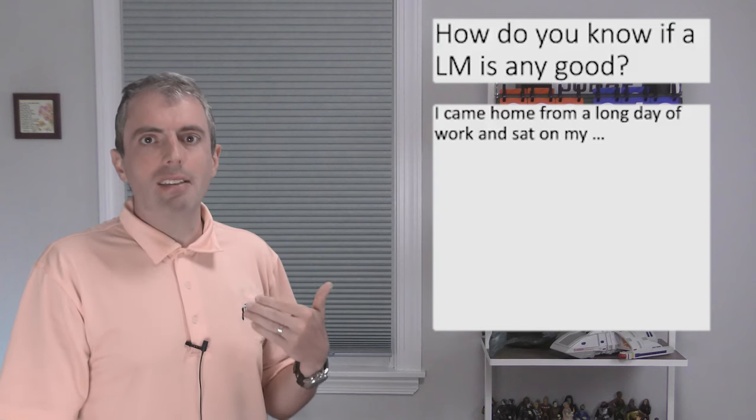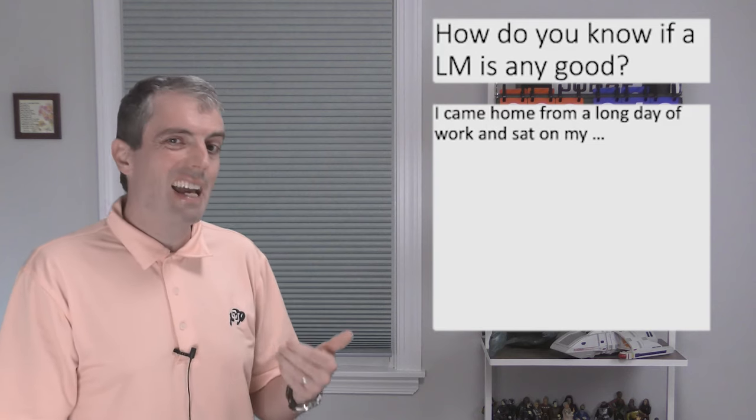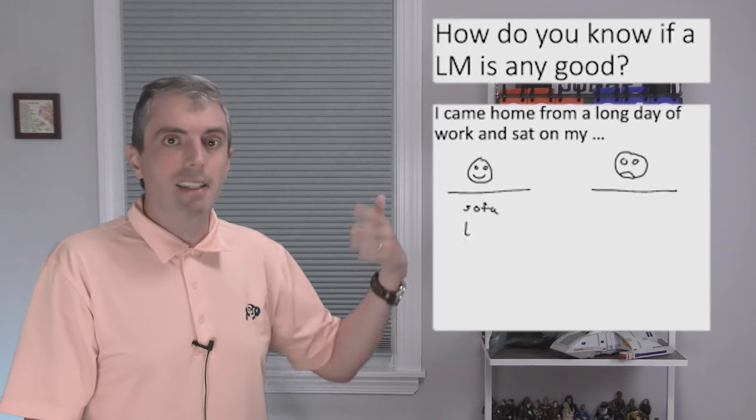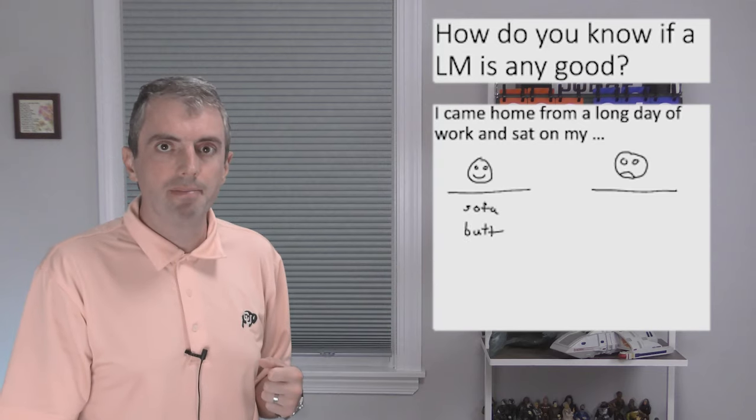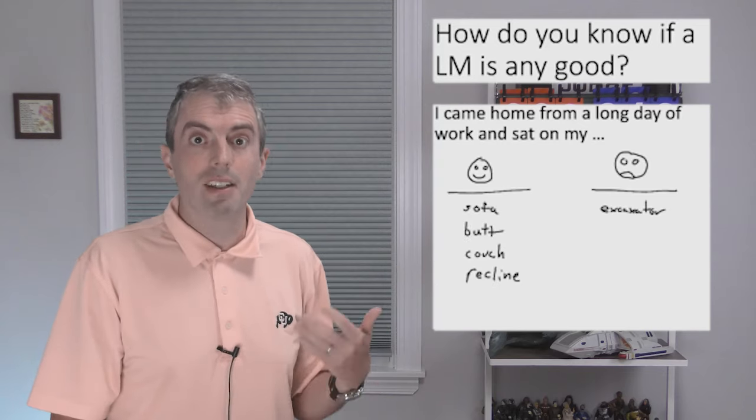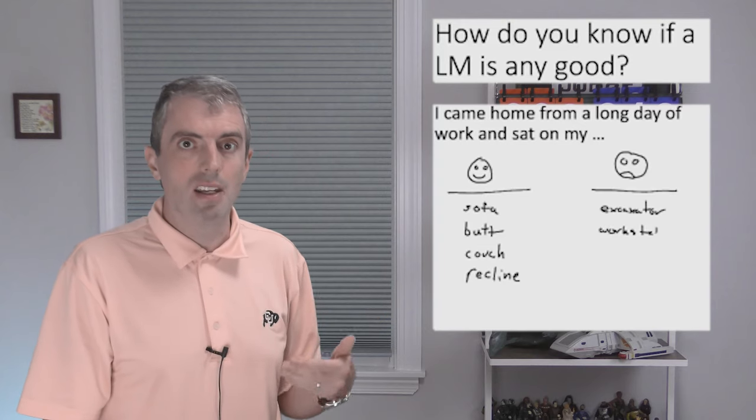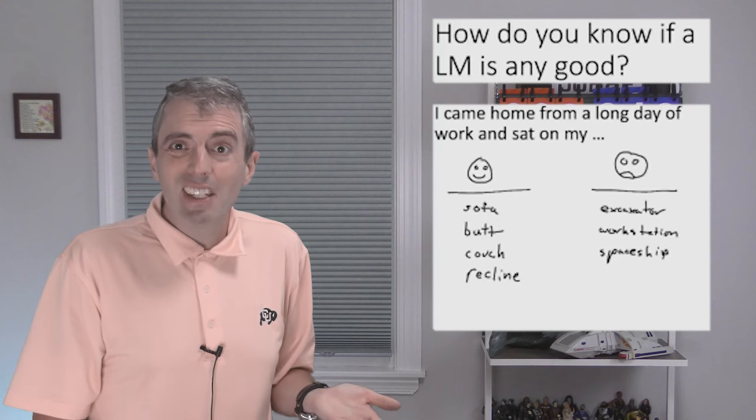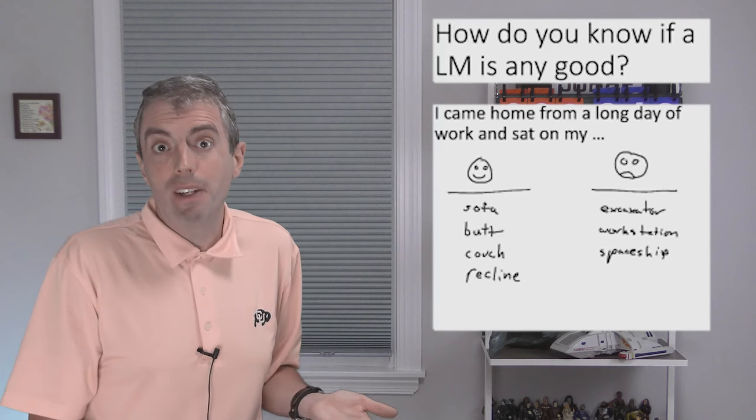Consider the sentence, I came home from a long day of work and sat on my... There are some good predictions and there are some bad predictions. Good guesses are things like sofa, butt, couch, recliner. Not so great guesses are things like excavator, workstation, spaceship, or jump seat. These are things you can sit on, but they don't really fit in this context.